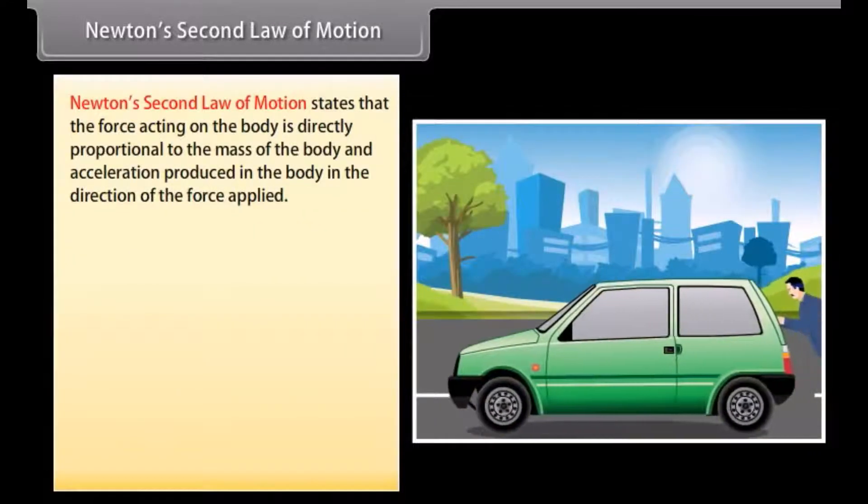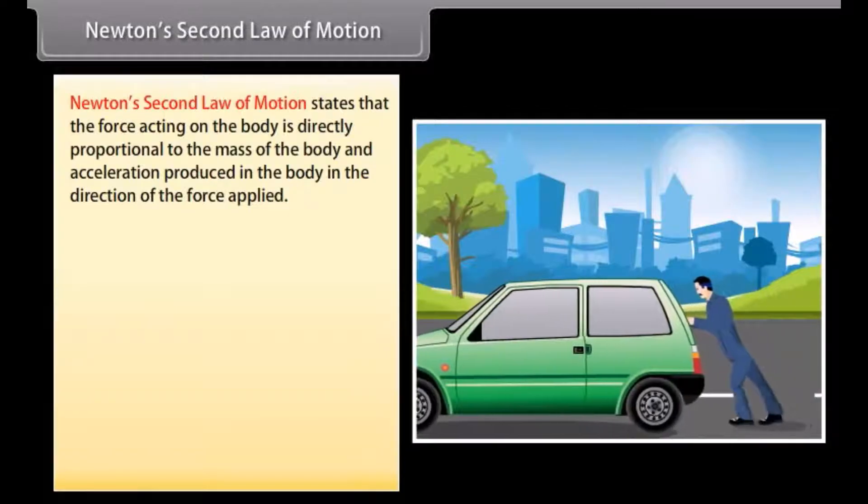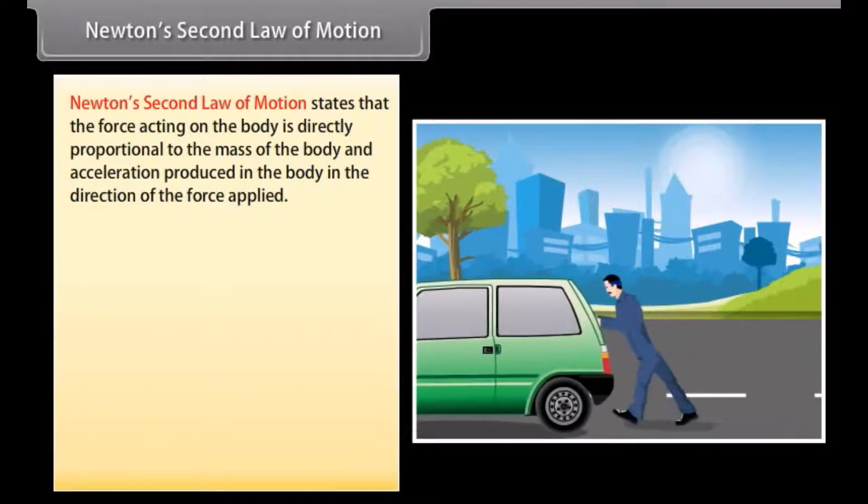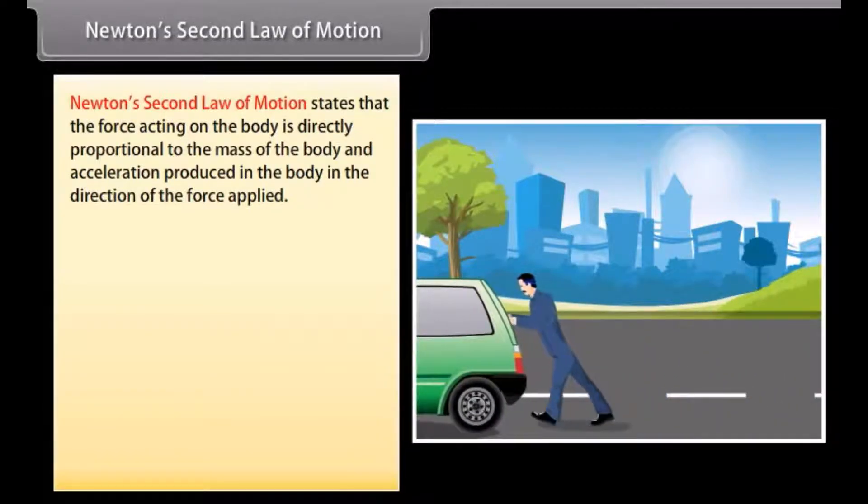Newton's second law of motion states that the force acting on the body is directly proportional to the mass of the body and acceleration produced in the body in the direction of the force applied. F is equal to M into A, where F is equal to force, M is equal to mass, A is equal to acceleration.